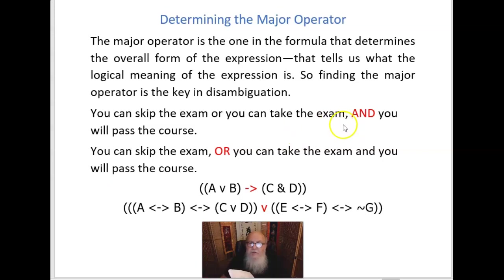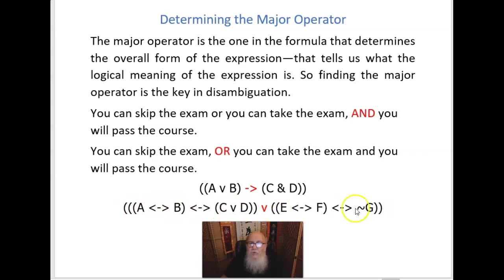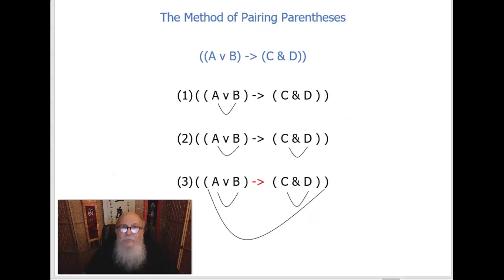Consider: 'You can skip the exam, or you can take the exam, and you will pass the course.' Here the 'and' is the major operator — this whole statement is the left side of a conjunction, and this is the right side. Or: 'You can skip the exam, or you can take the exam, and you will pass the course' — here the 'or' is the major operator. For a simple example, the major operator is the conditional which joins the two units together: if A or B, then C and D. After you practice this and play with it, you'll be able to quickly see what the major operator is.